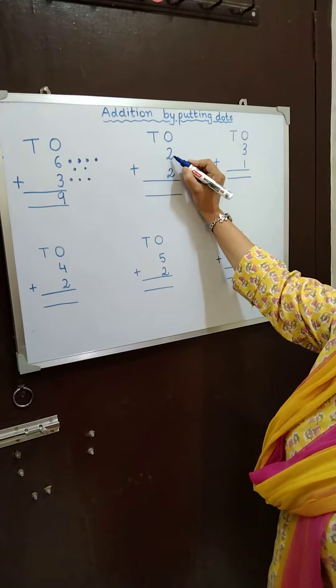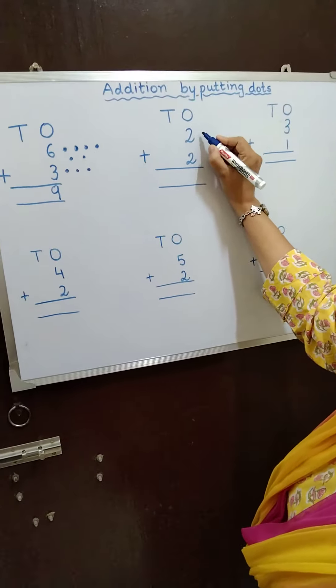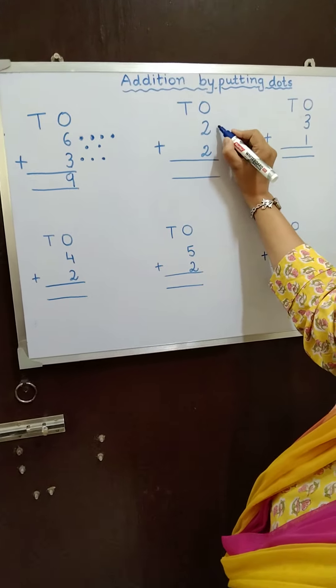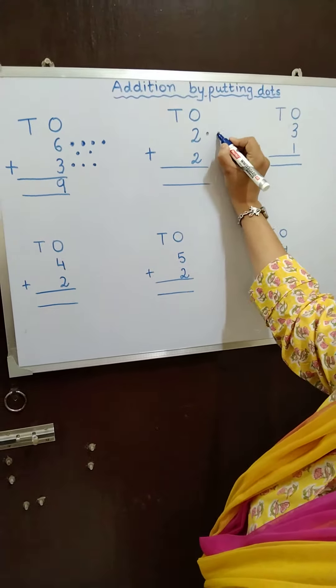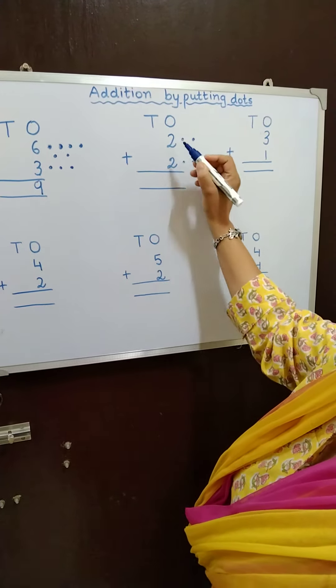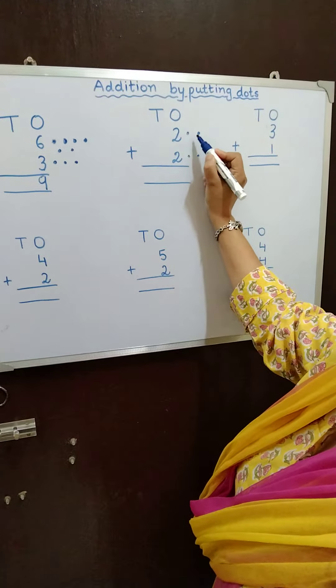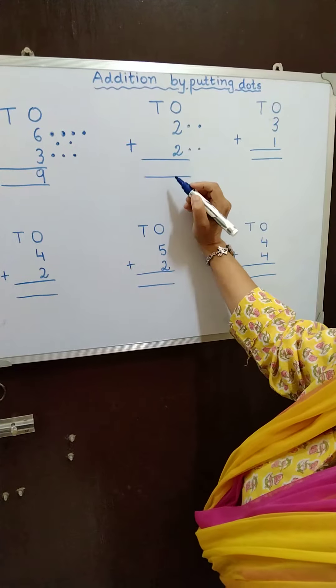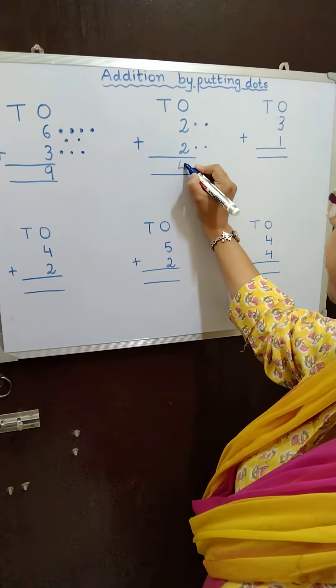Similarly, 2 plus 2. What we will do then? We will put 2 dots because the number is 2. This is also 2. So again, I will put 2 dots. So 1, 2, 3, 4. So I will write 4 here.